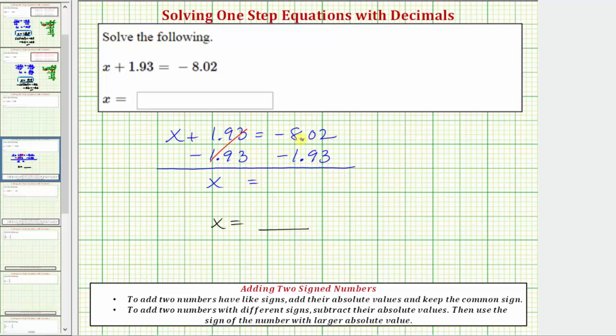If it's helpful, we can write negative 8.02 minus 1.93 as negative 8.02 plus negative 1.93. Looking at our notes below, in order to add two numbers with the same signs, we add their absolute values and keep the common sign. So because both of the values are negative and we're adding, the sum as well as this difference is going to be negative.